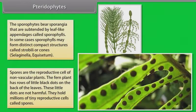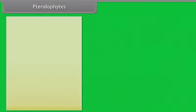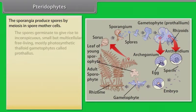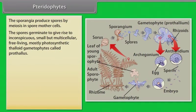Spores are reproductive cells of non-vascular plants. The fern plant has rows of little black dots on the back of the leaves. These little dots are not harmful. They hold millions of tiny reproductive cells called spores.